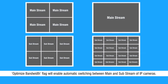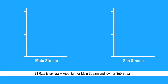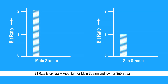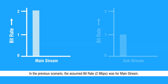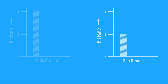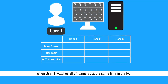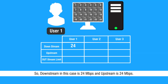The Optimize Bandwidth flag will enable automatic switching between main and substream of IP cameras. All IP cameras have two video streams: mainstream and substream. Bitrate is generally kept high for mainstream and low for substream. In the previous scenario, the assumed bitrate of 2 Mbps was for mainstream. Let us assume the bitrate for substream as 1 Mbps — half the value of mainstream. With Optimize Bandwidth flag checked and user 1 watching all 24 cameras at the same time on a PC, the bandwidth allocated will be 24 Mbps. So downstream is 24 Mbps and upstream is 24 Mbps; out-stream limit is 24.